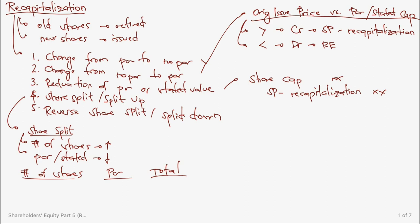For example, starting with 100,000 shares at 50 peso par value (total 5 million pesos), a 5-to-1 share split produces 500,000 shares at 10 peso par value, still totaling 5 million pesos. After any recapitalization — whether change from par to no par, reduction of par, share split, or reverse share split — the total shareholders' equity before and after remains the same.